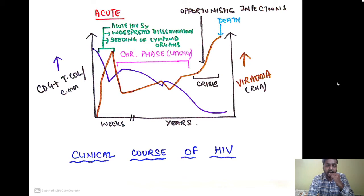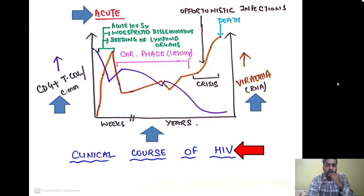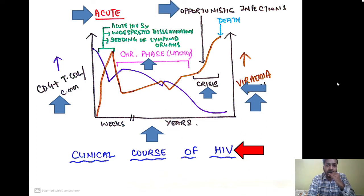Now let us look at the clinical course of HIV on this graph. On the y-axis we have CD4+ T cells and viremia; CD4+ T cells are shown in blue and viremia in brown. On the x-axis we have the time frame in weeks and years. There are three phases: acute infection occurs in weeks, characterized by acute HIV syndrome and widespread dissemination with seeding of lymphoid organs; followed by a chronic phase of clinical latency continuing for several years, on average around 7 to 10 years; and then the AIDS period characterized by opportunistic infections and ultimately death of the patient.